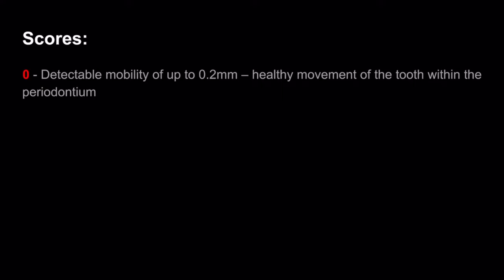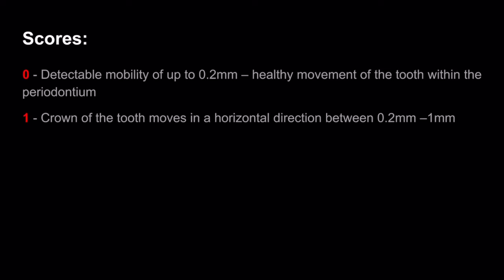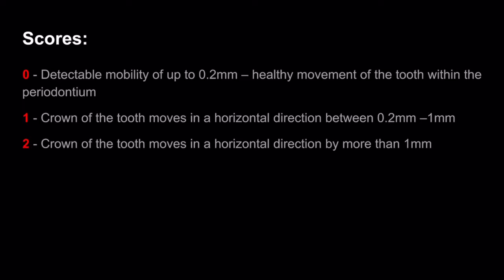Grade 0 means there is detectable mobility of up to 0.2 millimeters, which is considered healthy movement of the tooth within the periodontium. Grade 1 is when the crown of the tooth moves in a horizontal direction between 0.2 to 1 millimeter. Grade 2 means that the crown of the tooth moves in a horizontal direction by more than 1 millimeter.